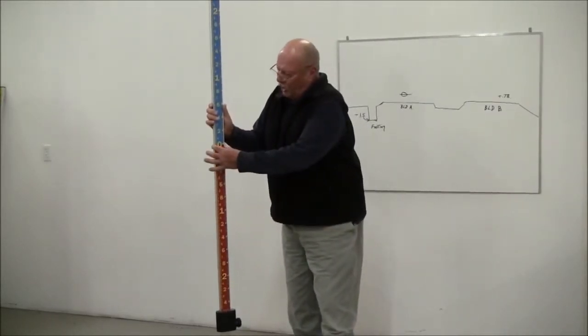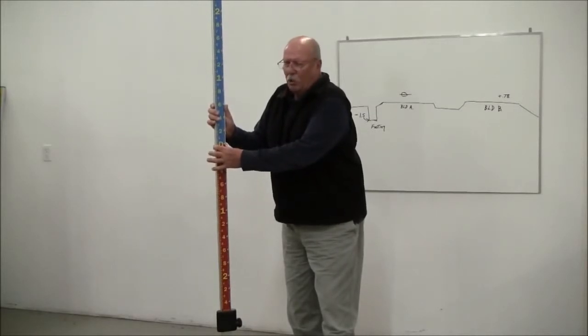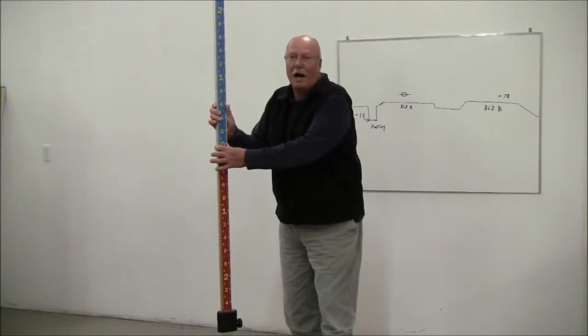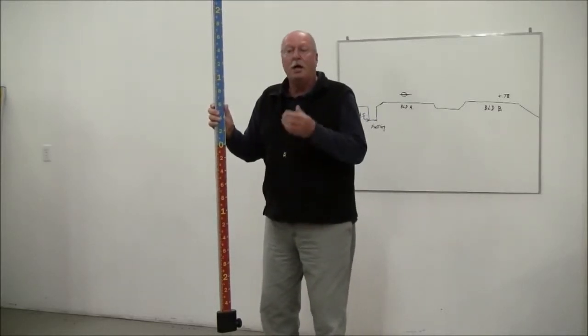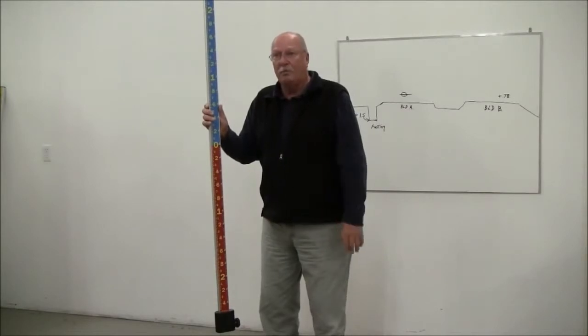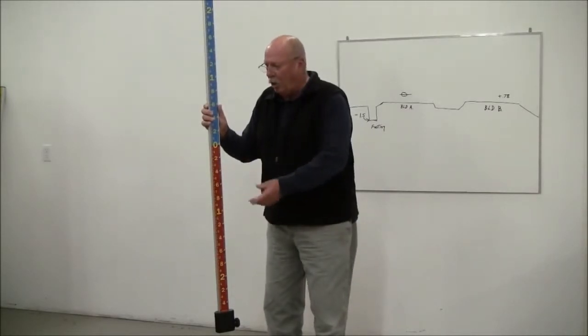What that does for you in the field is when you set up at your zero point and you want to know any place on the job whether you're high or low from that point and by how much, it's going to tell you. So if you're high by 52 hundredths, it'll say you're higher than your takeoff point by 52 hundredths. If you're low, conversely, it'll tell you you're low and by how much.